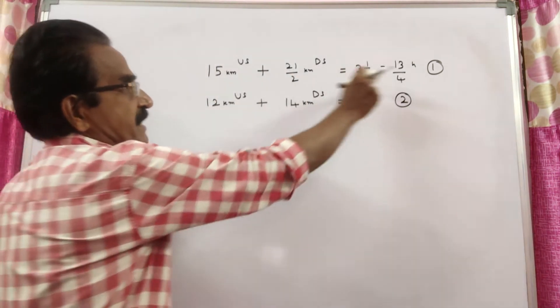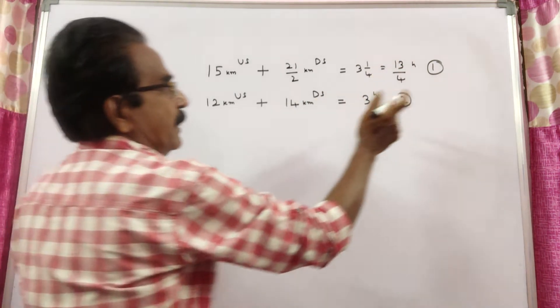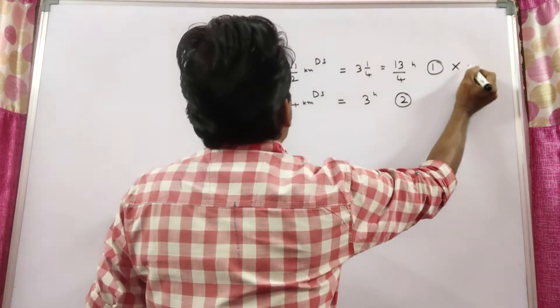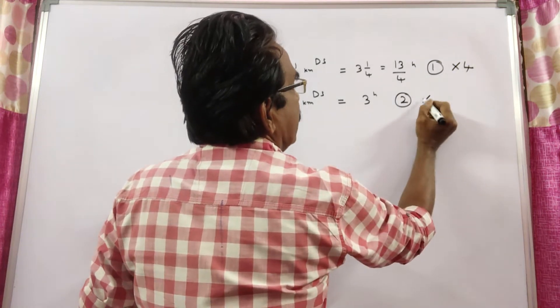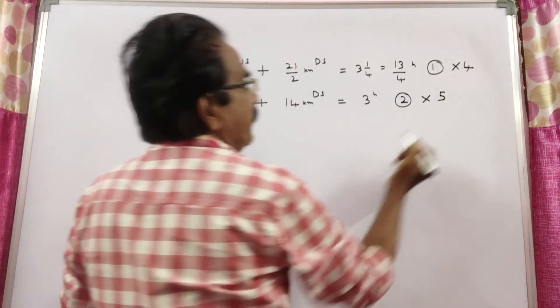This is equation 1, this is equation 2. I am multiplying this equation by 4 and equation 2 by 5.